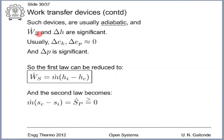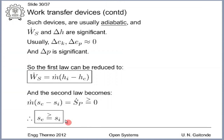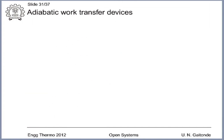The second law becomes m dot into (s_e minus s_i) equals S dot P, which must be greater than or equal to zero. This automatically means that under the default assumptions, these pieces of equipment will have exit entropy higher than — or in the limiting case equal to — the inlet entropy. It is very important to take care of this whenever we consider work transfer devices as open systems.